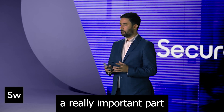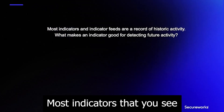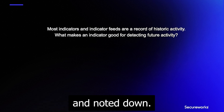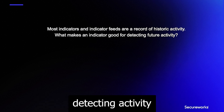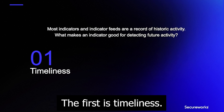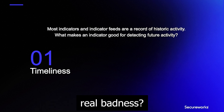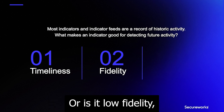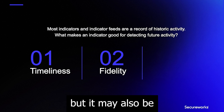Indicators play a really important part in a holistic defense posture. So what makes a good indicator? Most indicators that you see are really a record of historic activity — something that happened in the past that somebody saw and noted down. But what we want is for indicators to be effective at detecting activity that might happen in the future. There are really three dimensions to that. The first is timeliness: how recent is this indicator, and when was the last observation of it showing real badness? Fidelity is the second: is this a true high-fidelity indicator that definitely means something bad, or is it low-fidelity and mixed in with other things — possibly an indicator of badness, but also possibly something legitimate?